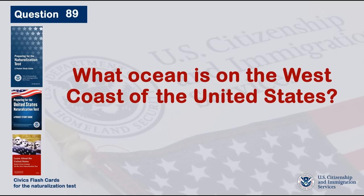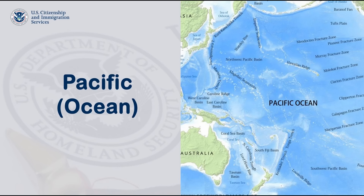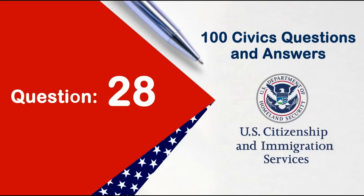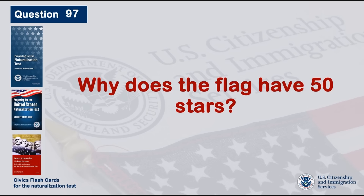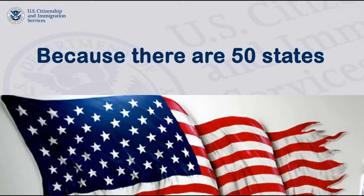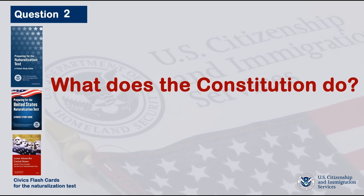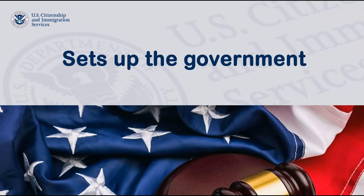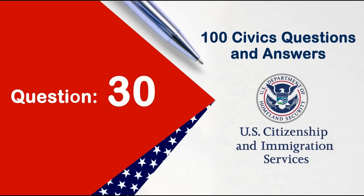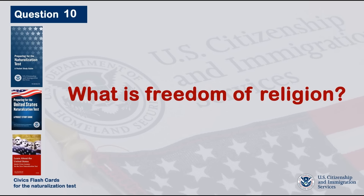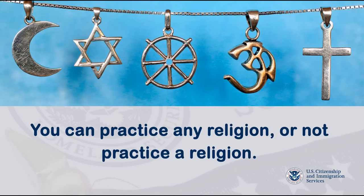What ocean is on the west coast of the United States? Pacific Ocean. Why does the flag have 50 stars? Because there are 50 states. What does the Constitution do? Sets up the government. What is freedom of religion? You can practice any religion, or not practice a religion.